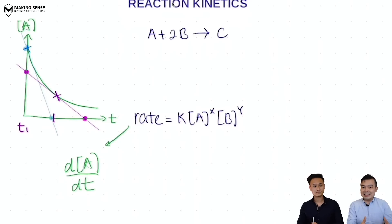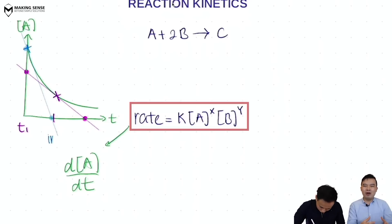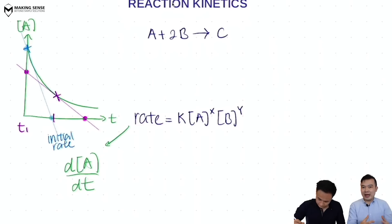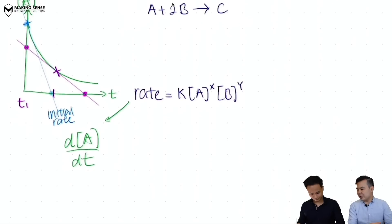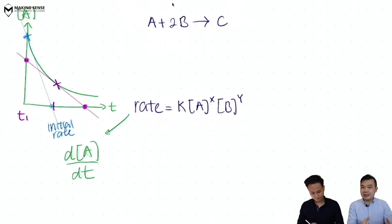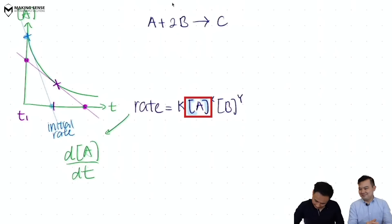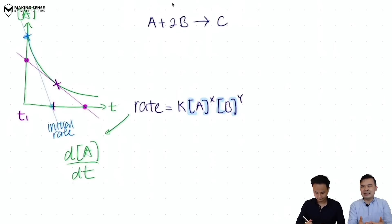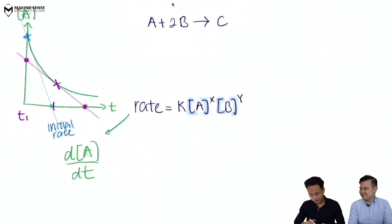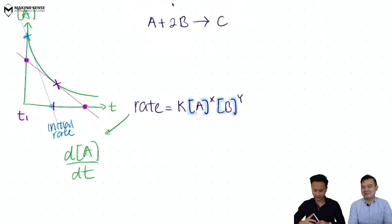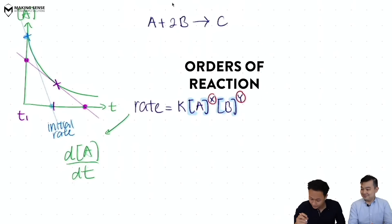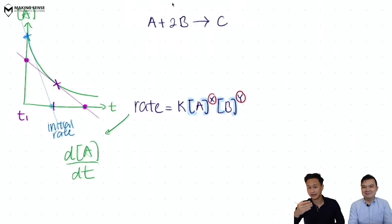Now let's look at the rate equation, which is a more mathematical way of expressing the rate. Looking at this rate equation, you can see the rate is dependent on the concentrations of A and B — the reactants. The rate can be more dependent on one reactant than another, and this is represented by the powers that the concentrations are raised to. The larger the power, the more it affects the rate. In chemistry, we call these the orders of reaction — the order with respect to A is X, and with respect to B is Y.